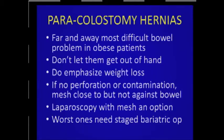Paracolostomy hernias are probably far and away the most difficult bowel problem in obese patients. When patients come in with their ileal loop obstructed from a hernia and need nephrostomy stents, they're really difficult to fix — paracolostomy hernias are even worse than general hernias because you have the ostomy to work with. My advice: if they come to you when they're small, don't ignore them, fix them early. Emphasize weight loss. I've done staged bariatric operations in this situation — you need a more durable operation like a bypass to get long-term weight loss. If you use mesh, make sure it's not contaminated or at risk of eroding into bowel. Laparoscopy with mesh is a nice option if possible.